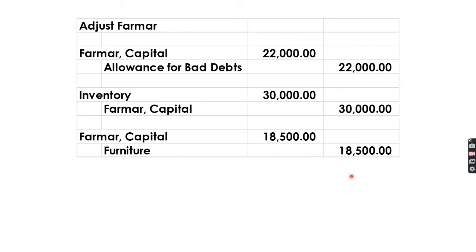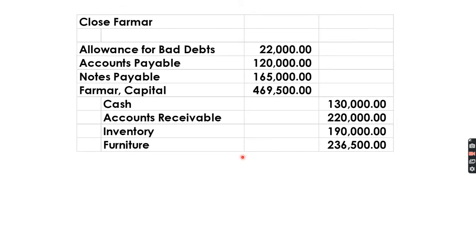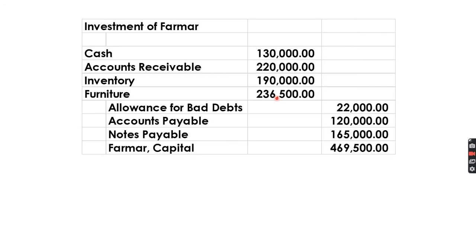For Farmer's books, we recognize allowance for bad debts, an increase in inventory, and a decrease in furniture value. The adjusted capital of Farmer is 469,500, which becomes the net investment amount recorded in the partnership books.